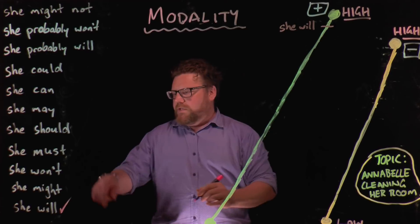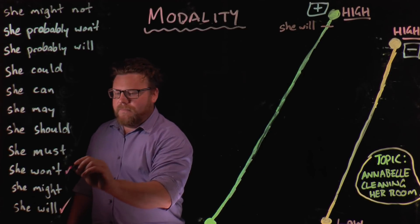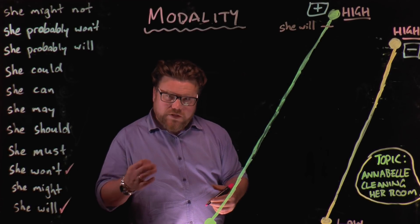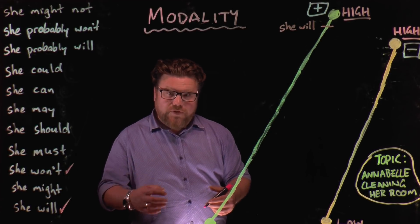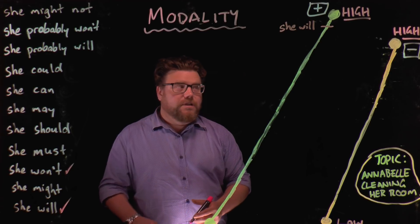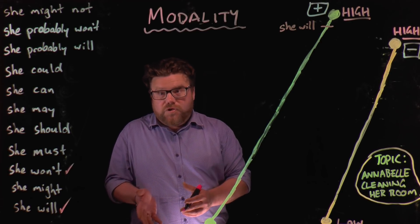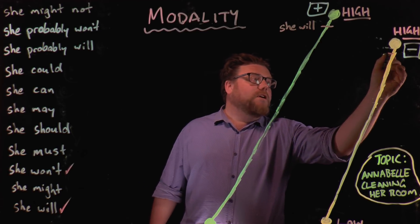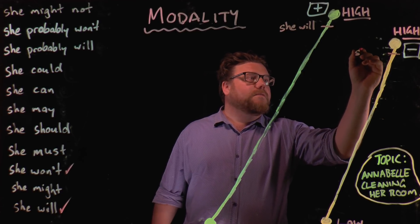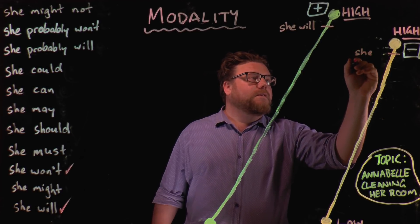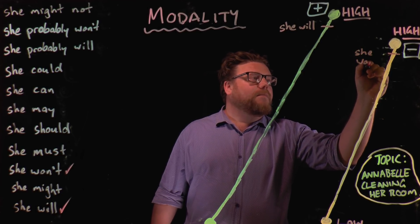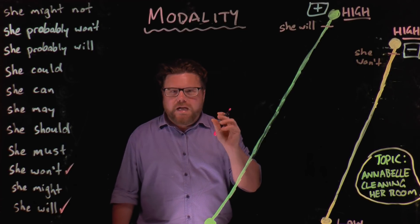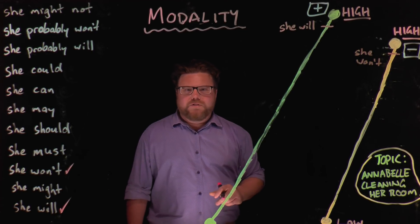'She won't' is also high modal, high certainty, even though it's negative. We're saying she won't, but we're quite sure about it. So it goes on the negative side, but still near the top of the scale, because it is a high degree of certainty.